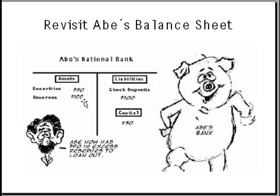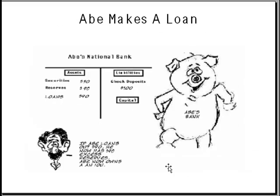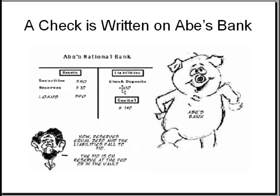Let's make a loan. Say Abe loans out the ninety dollars to a creditworthy customer who will repay it. The loan is something that Abe owns since the customer owes him that money. After making the loan, he'll have ten dollars in reserves left over and ninety dollars loaned out. Notice that the amount of checkable deposits listed on the balance sheet also decreased, but his net worth has increased due to the loan. Essentially, he has used a customer's money to make money.